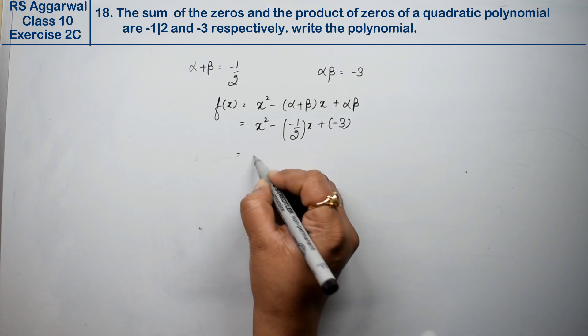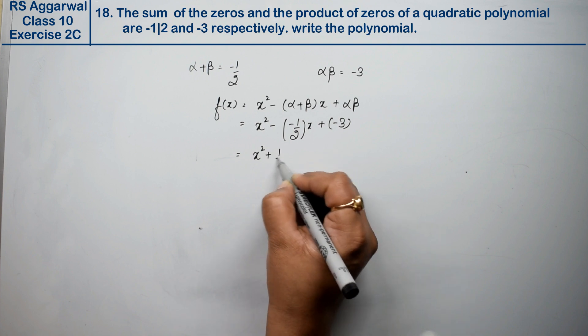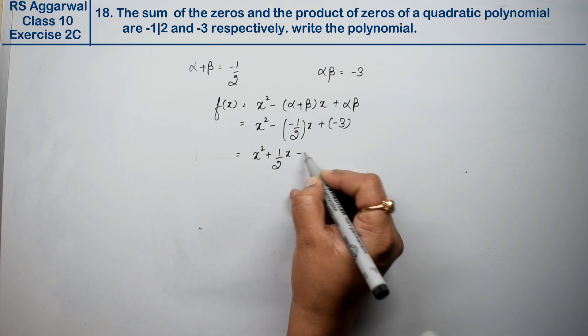If we open the bracket, this becomes x square plus 1 upon 2x minus 3.